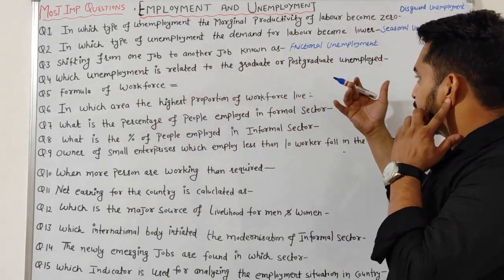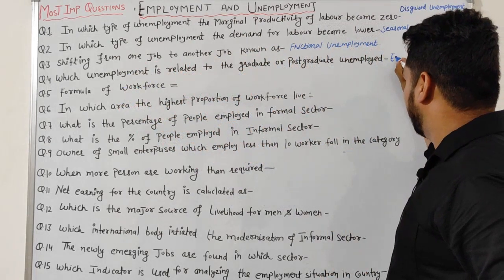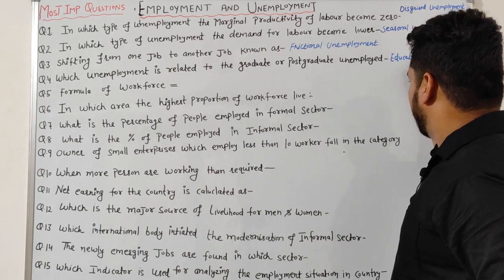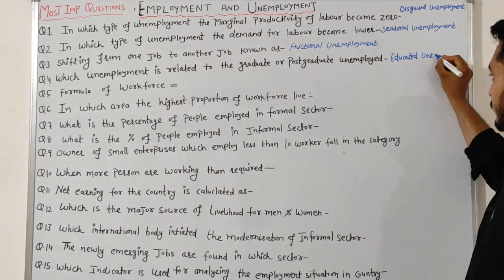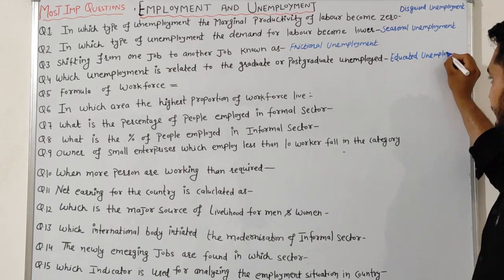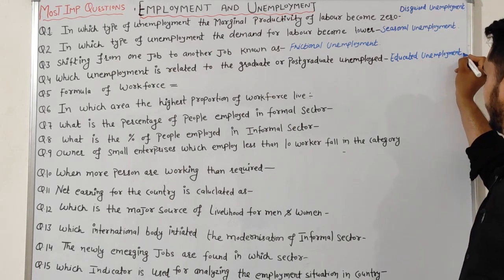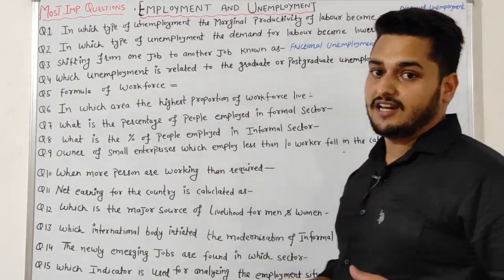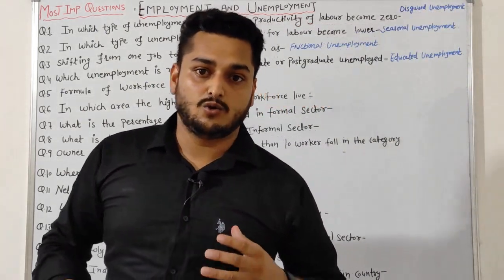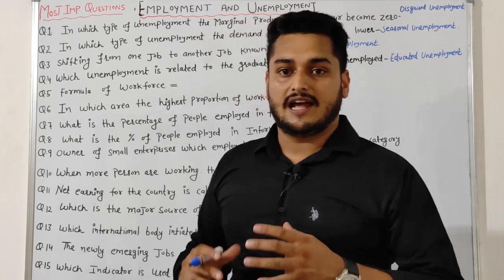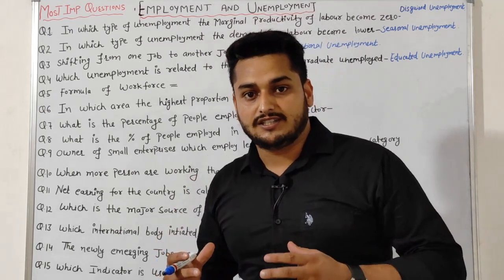Question 4: Which unemployment is related to graduate or postgraduate unemployed persons? The answer is educated unemployment. There are many graduates or postgraduates in the country who are unemployed, and there are fewer growth opportunities in jobs.